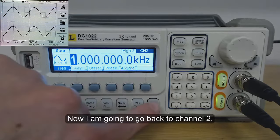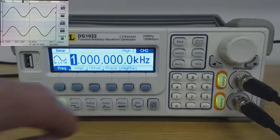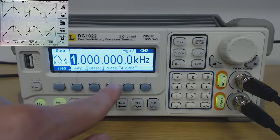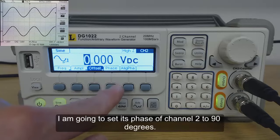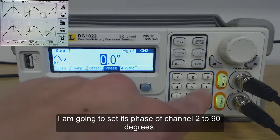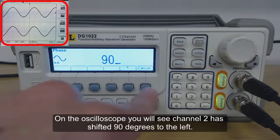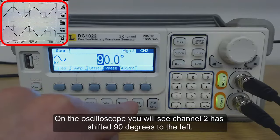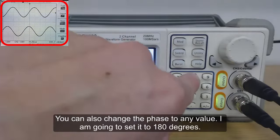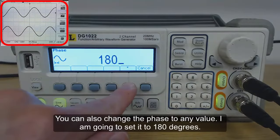Now I'm going to go back to channel 2. I'm going to set the phase of channel 2 to 90 degrees. On the oscilloscope you will see channel 2 has shifted 90 degrees to the left. You can also change the phase to any value.